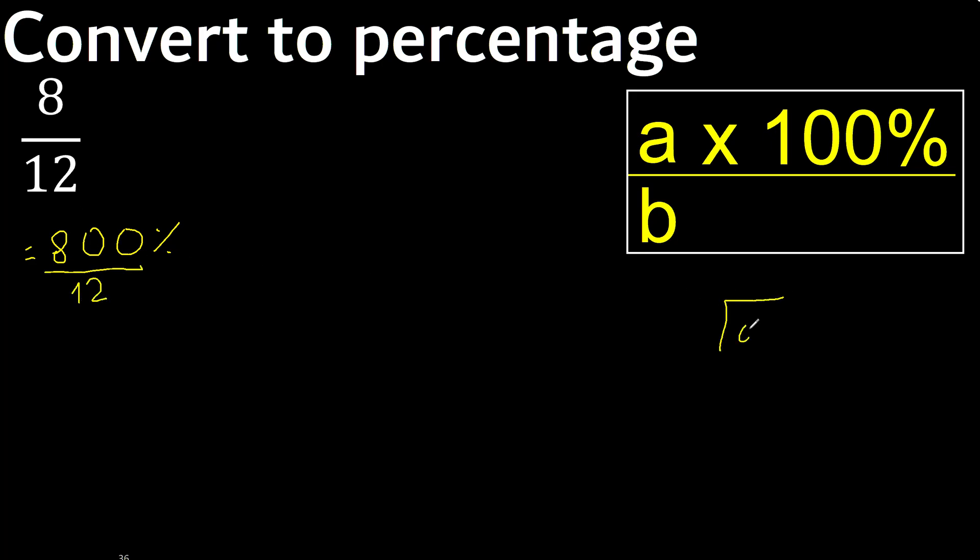Here, 800 divided by 12. 8 is less, therefore next 0. 80. 80 is not less, therefore with 80, 12 multiplied by which number is nearest to 80?